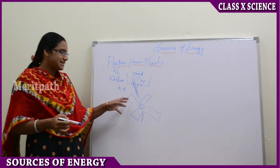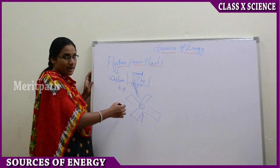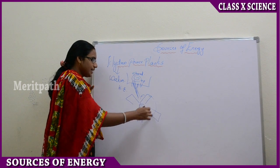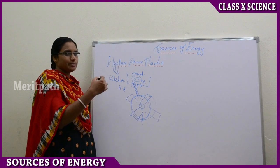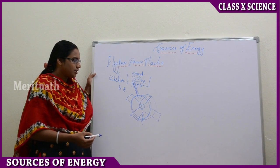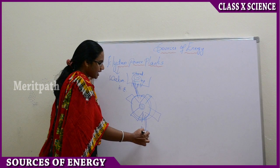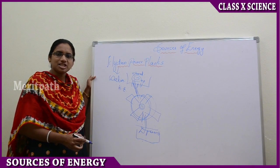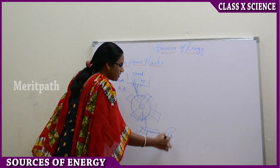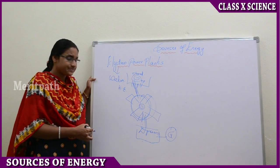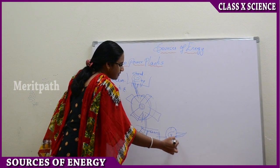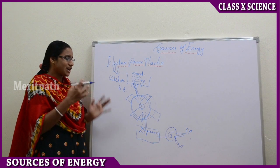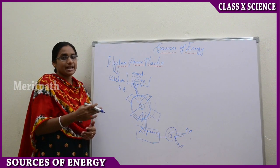When this water falls on the turbine blades, there will be a rotation of these blades, generating energy which is transferred to the dynamo. The dynamo converts this into energy, and further this is converted into electrical energy with the help of the generator, and it is given as three-phase supply for industrial purpose and two-phase supply for households.